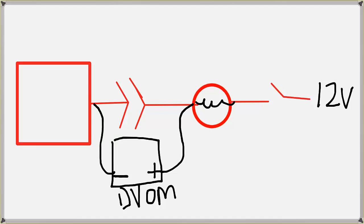With the switch open, obviously I'm gonna read zero volts. But when I engage that switch, my meter says 12.